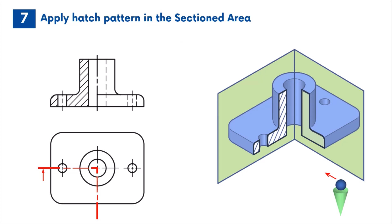Hidden lines are usually not shown on the unsectioned half unless their use improves the drawing clarity. For a symmetrical part like the one shown here, there is no requirement for the hidden lines.